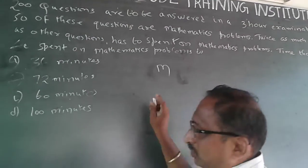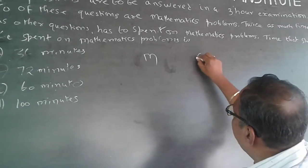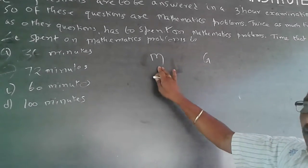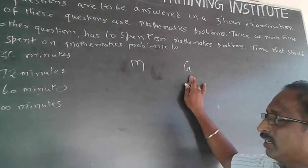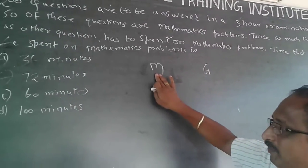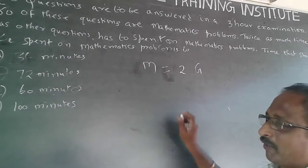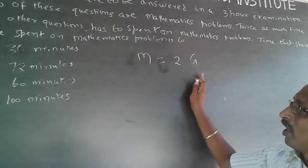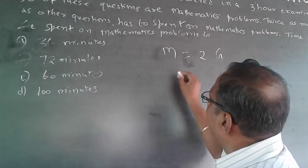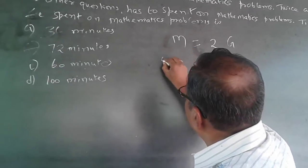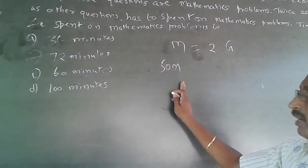Let m be the time taken for each math question and g be the time taken for each general question. Because I can take twice the time for each math question, m will be equal to 2g. Now the total time taken will be 3 hours, that is 180 minutes. So I can write it as 50 into m, where m is the time taken for each math question.